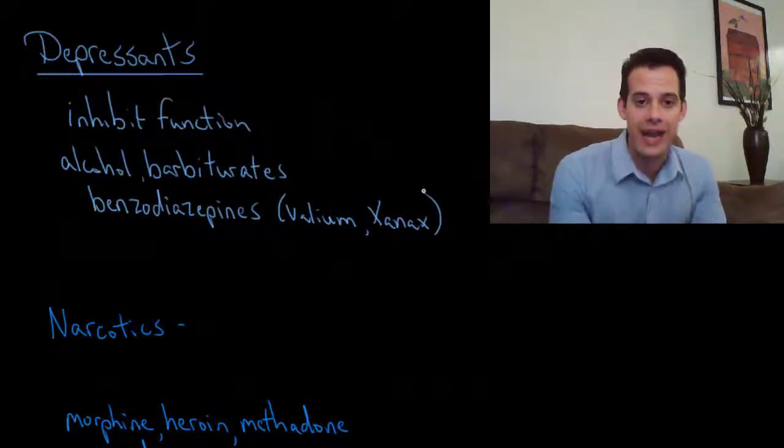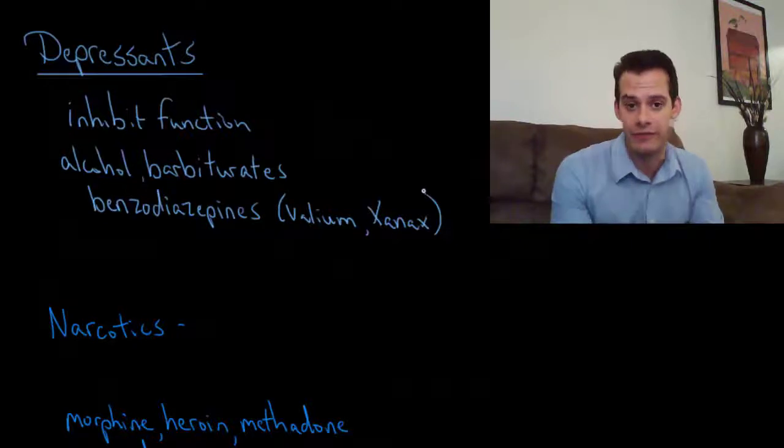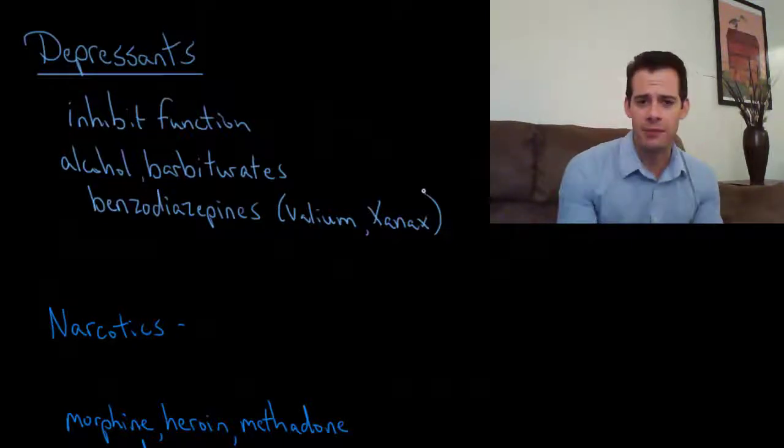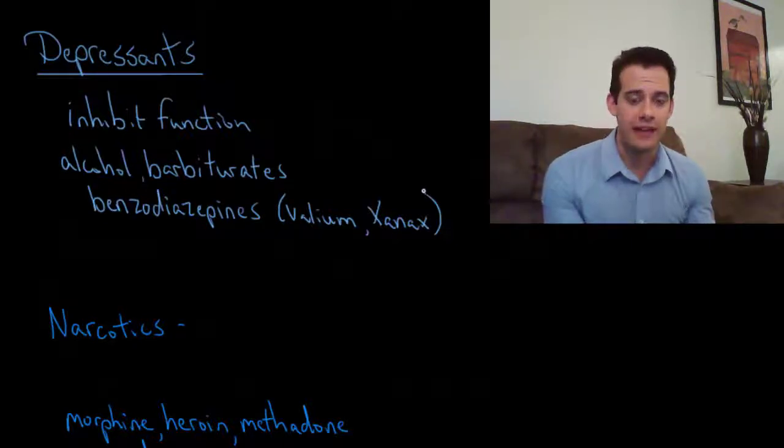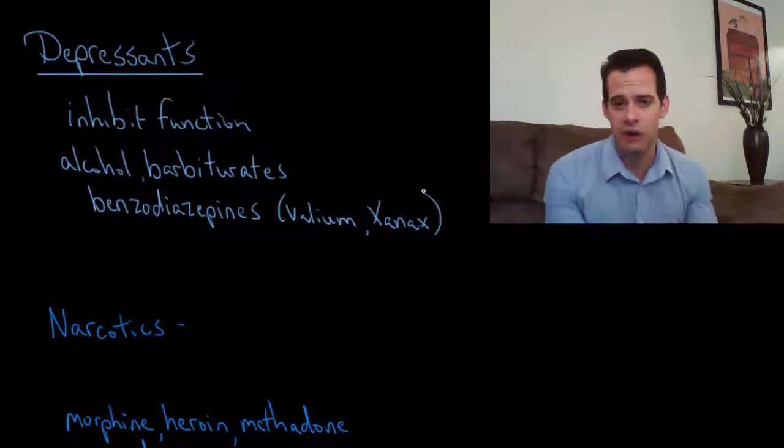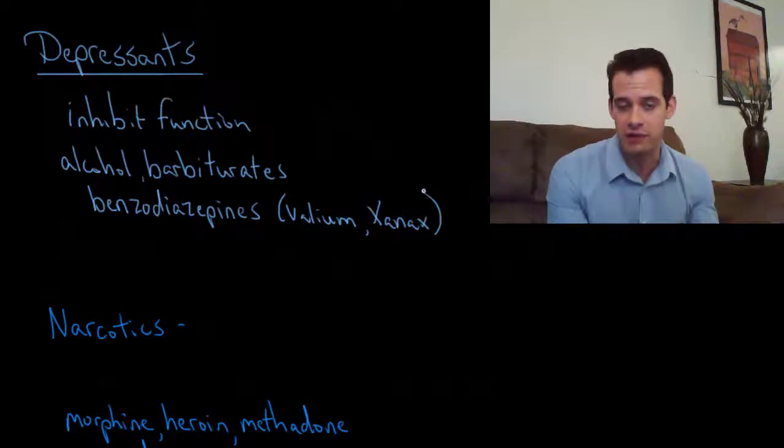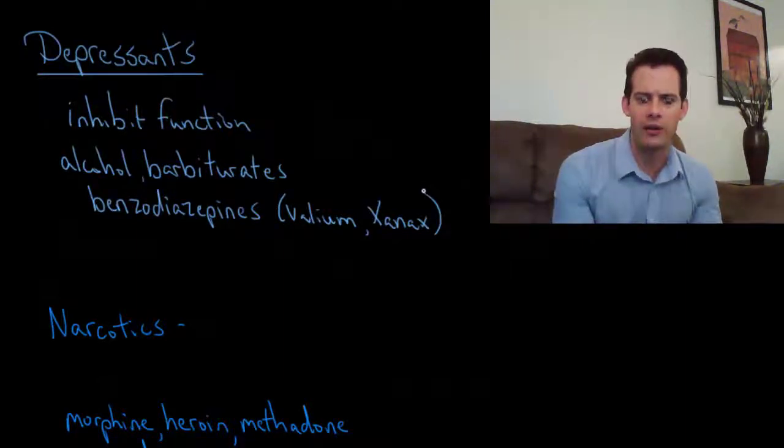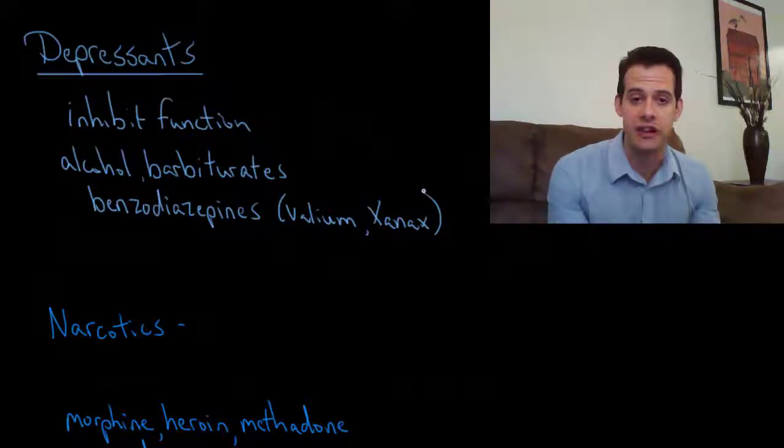In the case of overdose we can inhibit function so much that a person falls into a coma or even dies. I'd like to talk about depressants when it comes to tolerance and withdrawal because alcohol is one where people generally understand the idea of tolerance. Somebody who drinks a lot can generally drink more without having the same effects. So what's going on here and how does this relate to the withdrawal process of quitting alcohol or quitting barbiturates or benzodiazepines?